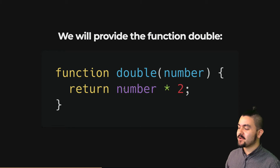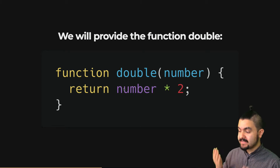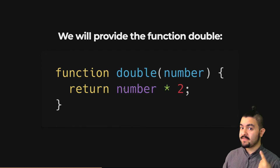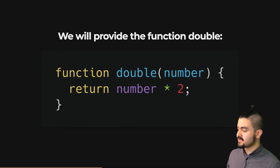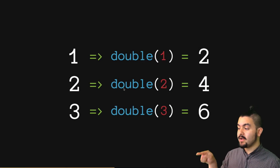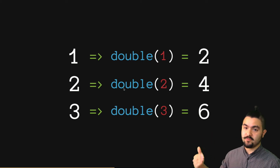So let's say we have a function called double. It takes in a number and returns that number times 2. What if we called this function on every element in that original array? We would end up with 2, 4, and 6. The main idea being: we have our array starting as 1, 2, and 3, we call double with each value, and then we get 2, 4, and 6.